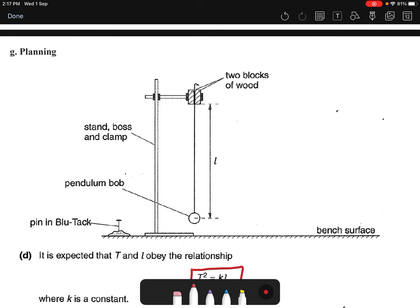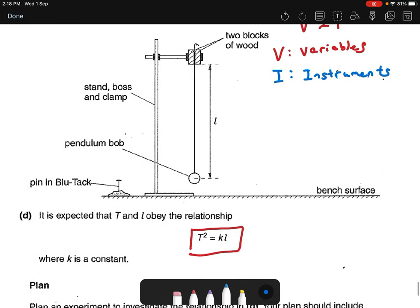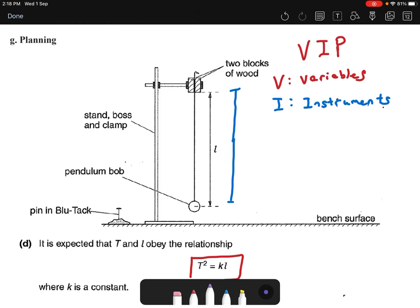This is variables. Then the I is instrument - so what are the instruments you are using to measure the variables? For example, for this experiment I need to measure the length, so I need to use a meter rule or half meter. Then I want to measure the period, so I must use a stopwatch because I need to measure oscillation - first 20 oscillations - and I use the stopwatch to measure the time taken for 20 oscillations. This is what I mean by instrument. Last but not least is your procedure. So procedure is how you will carry out the plan to investigate this relationship.